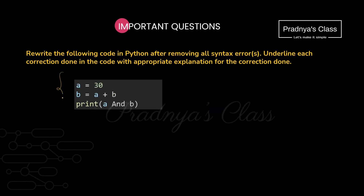We have one more question on the same format, this time for one mark — so you need to find two errors. The first statement is okay, but B is not initialized to any value, so you will get an error there. In the third statement, 'and' is written with a capital A — you should write the logical operator 'and' in lowercase like this.